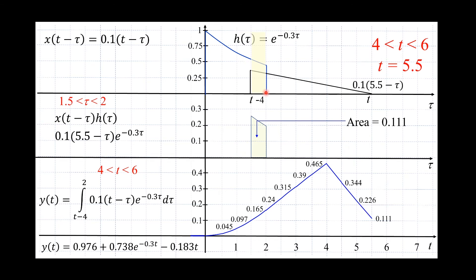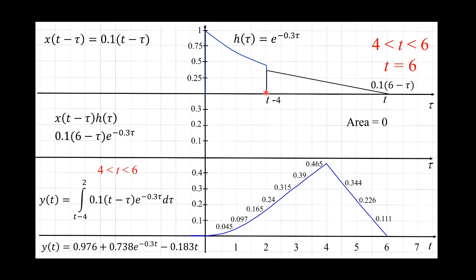The system will keep outputting until t=6, where it has released all stored energy. Looking at the output, the length is 6 units — which, according to the convolution property, should be the length of the input (4) plus the width of the second signal (2). That is what you will see in the animation.